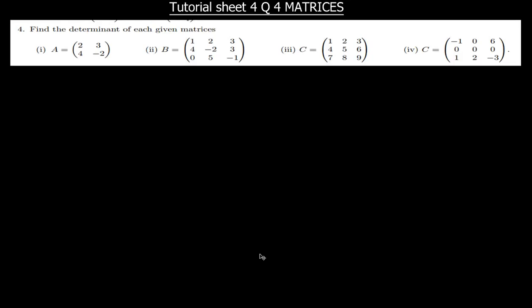Hi everyone. So this is question 4, tutorial sheet 4. The question says find the determinant of each given matrix. In this question, what you need to understand is that when finding determinants, normally we use what we call minors.